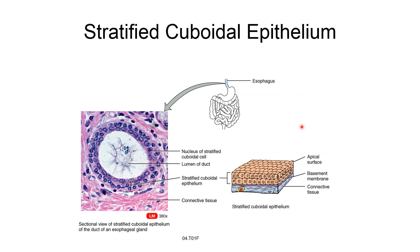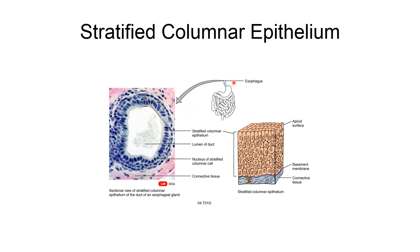Stratified cuboidal epithelium has cuboidal cells in more than one layer, attached to a basement membrane. It has great volume and is present in gland ducts, though it is very rare. Stratified columnar epithelium has columnar cells in more than one layer, also attached to a basement membrane, and is present in body parts with high abrasion such as pharynx, penis, and esophagus. It is the most durable epithelium and can withstand a lot of physical abrasion.